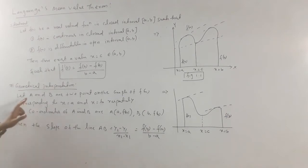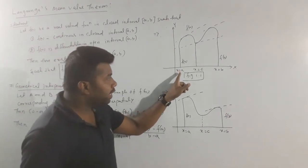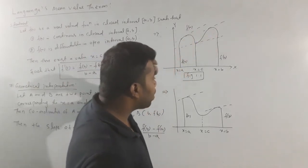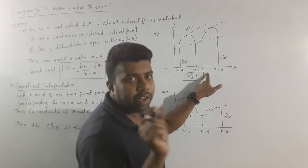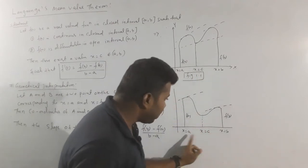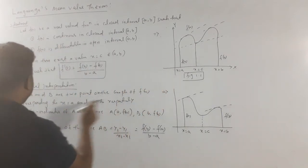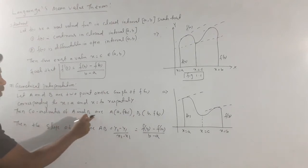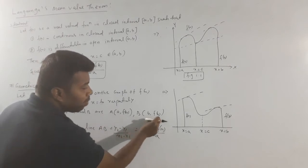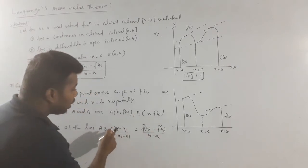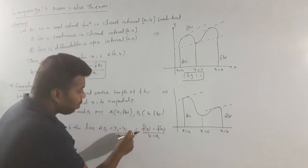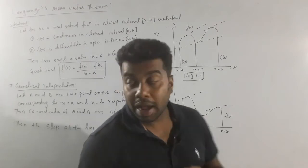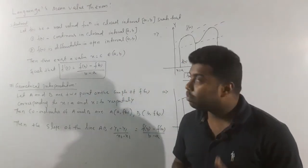There is a geometrical interpretation. Let a and b be two points, x equal to a and x equal to b. If we have a curve f of x, then x equal to c exists. The coordinates of a and b are (a, f(a)) and (b, f(b)). The slope of the line AB equals f of b minus f of a divided by b minus a. So Rolle's Theorem follows the same procedure as the Lagrange theorem.